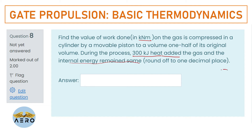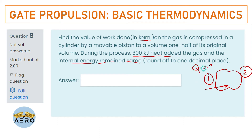In the given process, heat Q = 300 kJ has been provided. During the process, the internal energy U₁ and U₂ remain the same, which means the change in internal energy ΔU = 0. From that we need to find how much work is done.